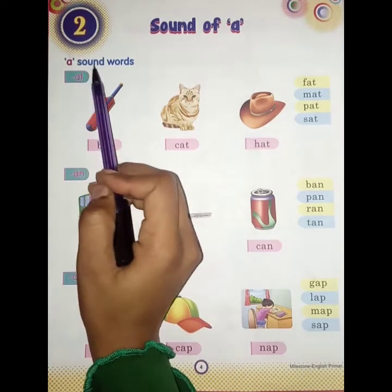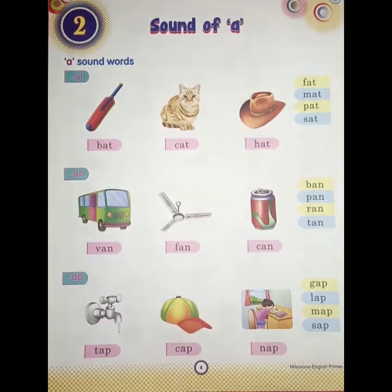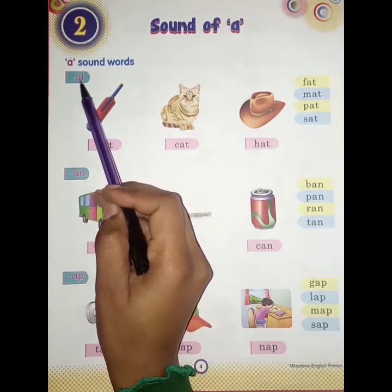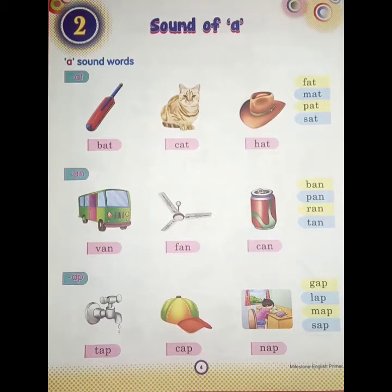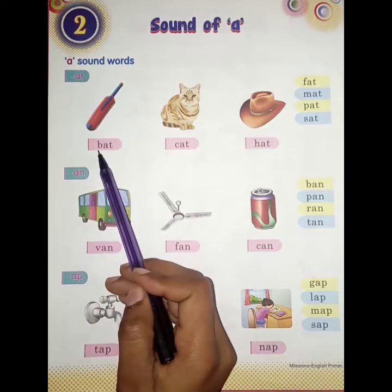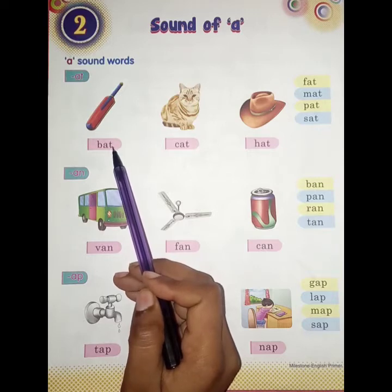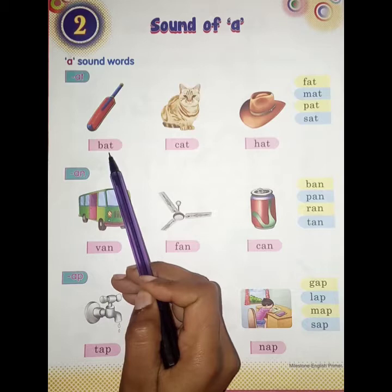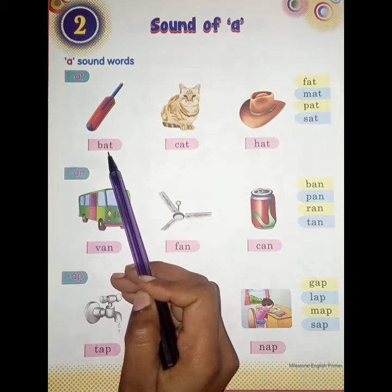So students, A sound words. These are some words which have the A sound. We start with A, T — the sound is 'at'. So words which end in A, T have the 'at' sound. First one is B, A, T — bat. What sound does it have? At. B, A, T — bat.